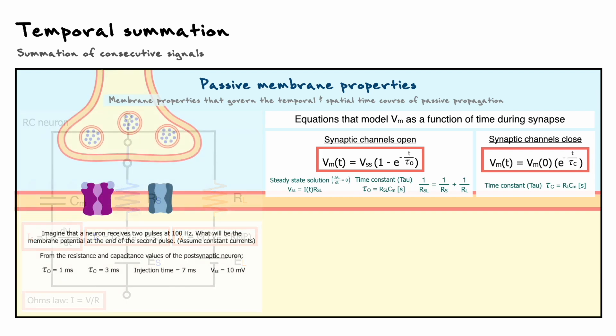To exemplify temporal summation, I want to give a numerical example of what a problem might look like, because I believe that's more telling and better for our comprehension. So, let's imagine that the membrane of this postsynaptic cell receives an excitatory connection that fires twice at 100 Hz. We want to figure out what will be the membrane potential at the end of the second pulse, and we will assume that the currents are constant.